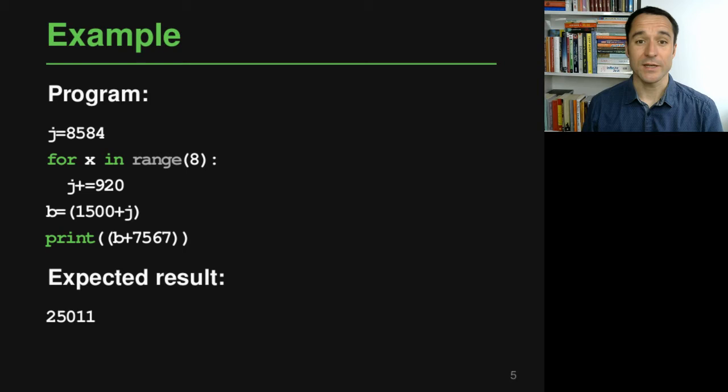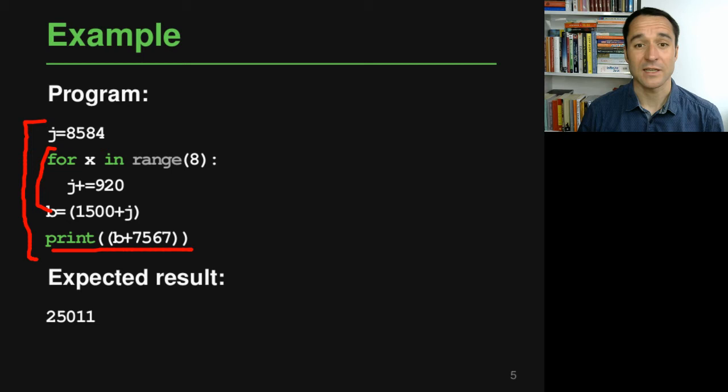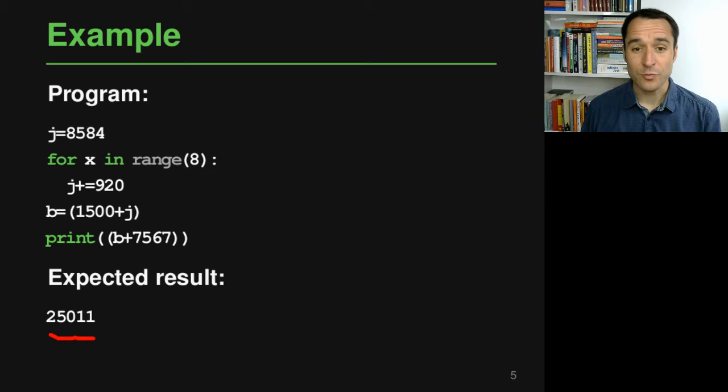Let's have a look at a concrete example of how this is supposed to work. What you see here is one of these simple programs that are in scope for this work. This is Python code. The program has a couple of statements, a couple of variables that mostly deal with numbers. There even is a loop here. And at the end, there's a print statement that takes the result of some arithmetic expression and prints it to the console. Now what the model is supposed to predict is the output of this program, basically what is printed to the console. The output in this case happens to be 25011. We want the model to predict exactly this output.